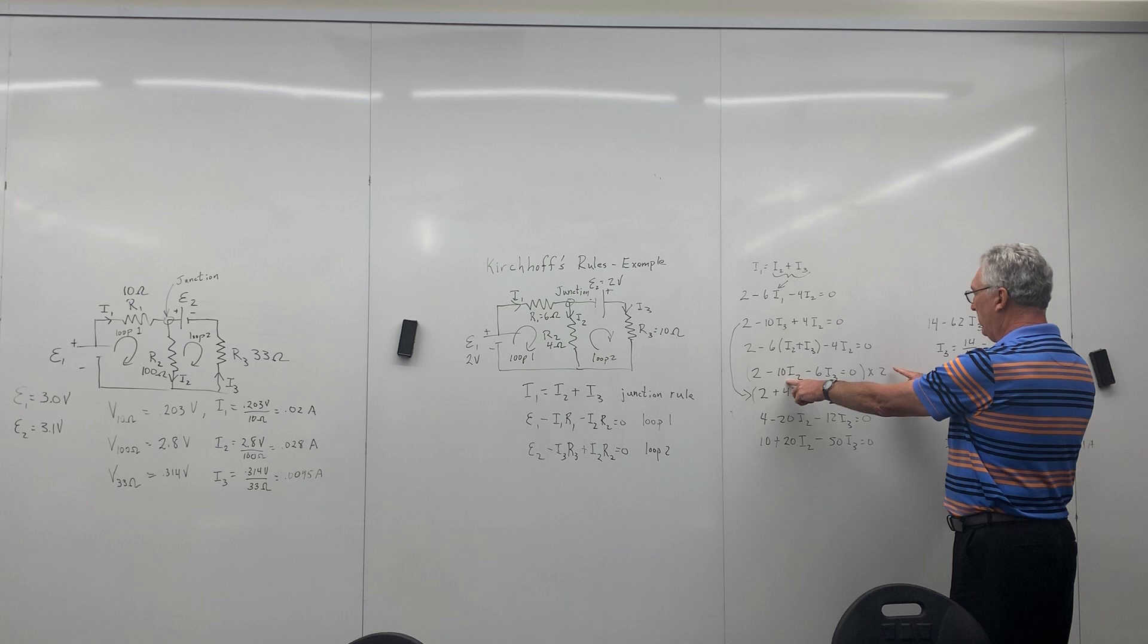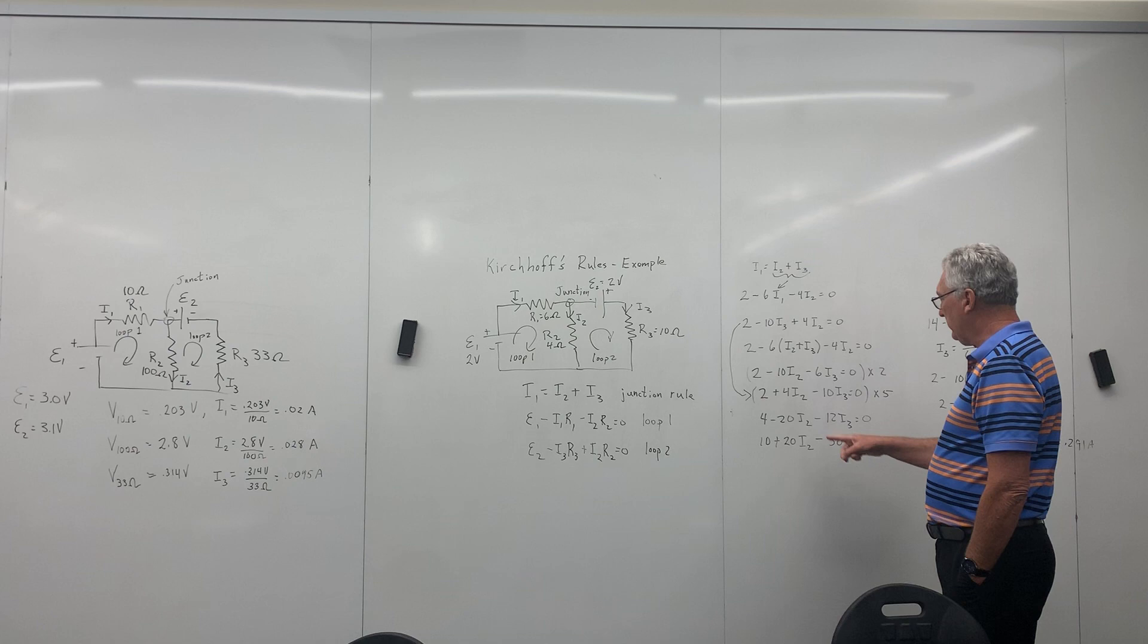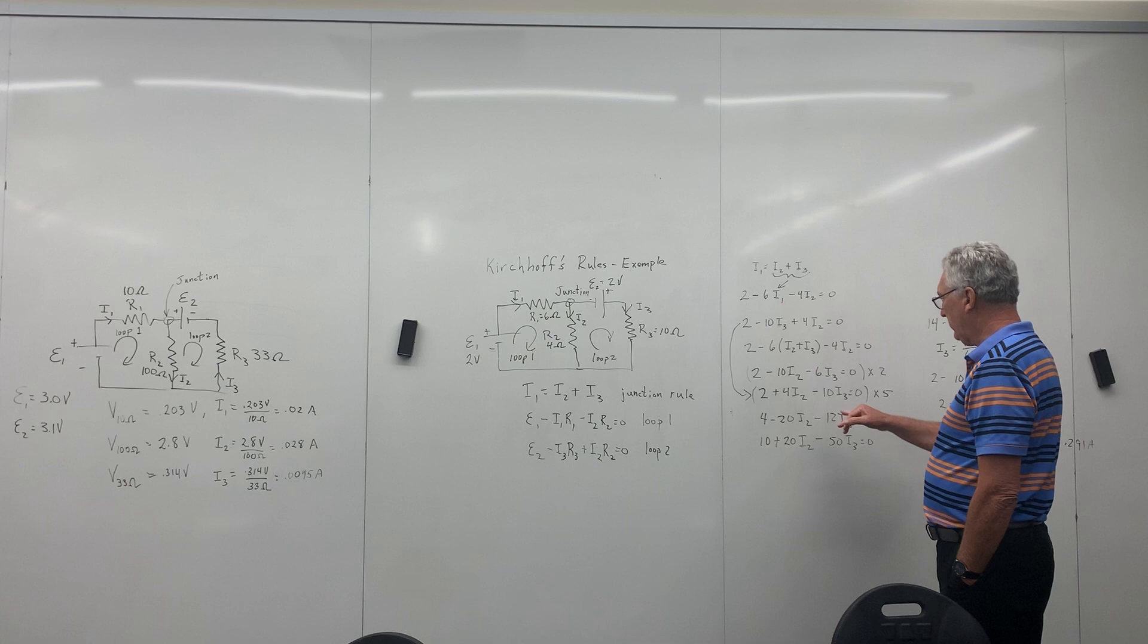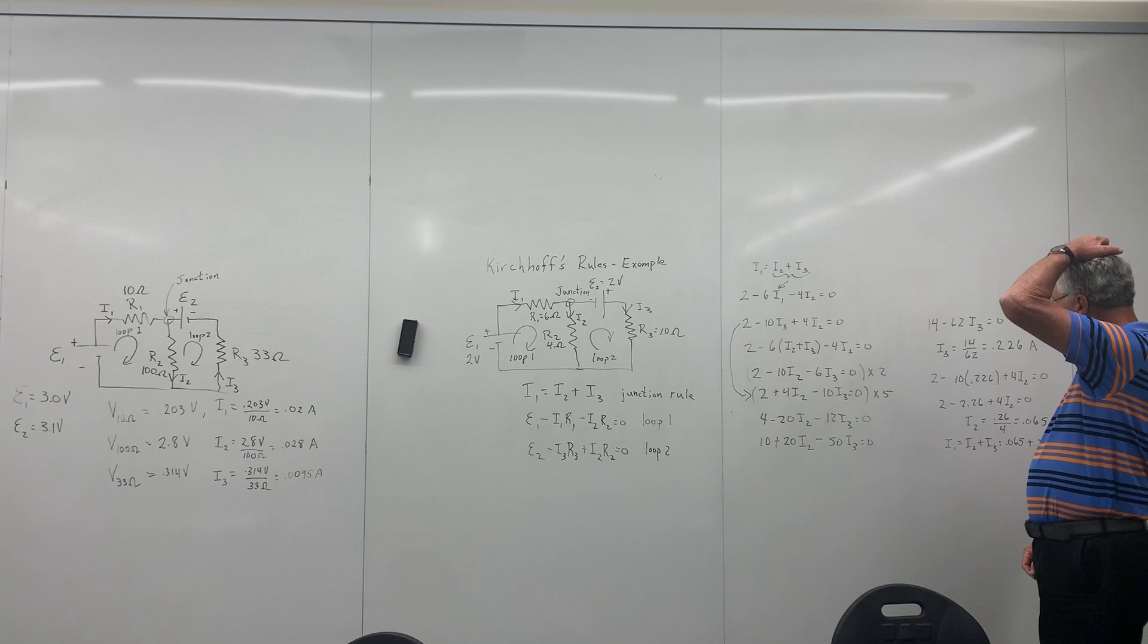And now what I'm going to do, I'm going to eliminate, what am I eliminating? I2. So I'm multiplying this equation by two. This equation by five, that'll give me 20I2 and one is plus and one is minus. And so I'll eliminate those two. So I get 4 minus 20I2 minus 12I3 equals zero. When I do that math here, and then for this one here, when I multiply by five, I get 10 plus 20I2 minus 50I3 equals zero.